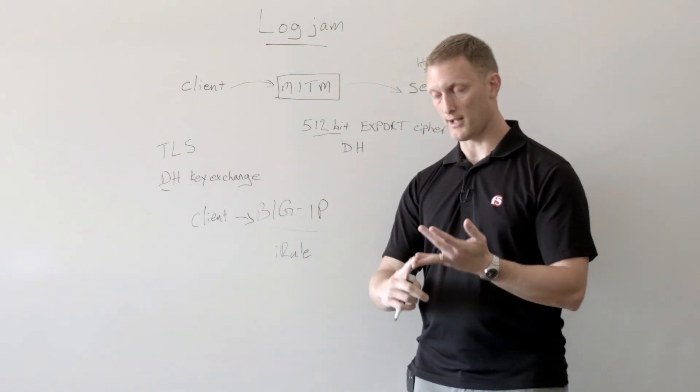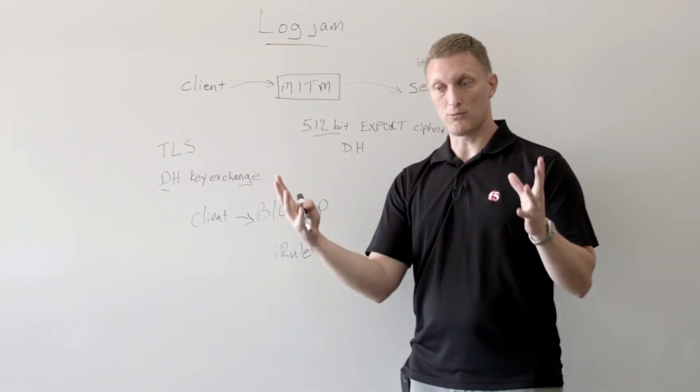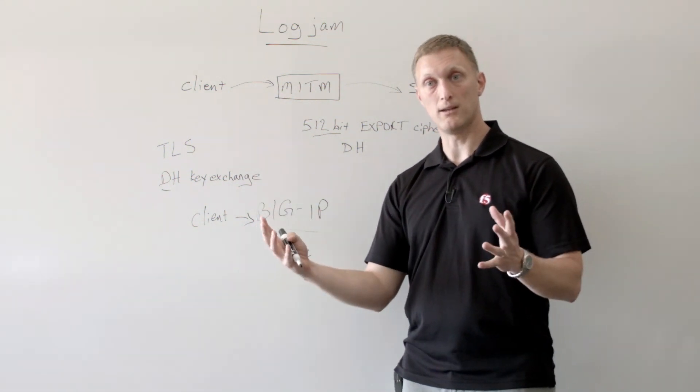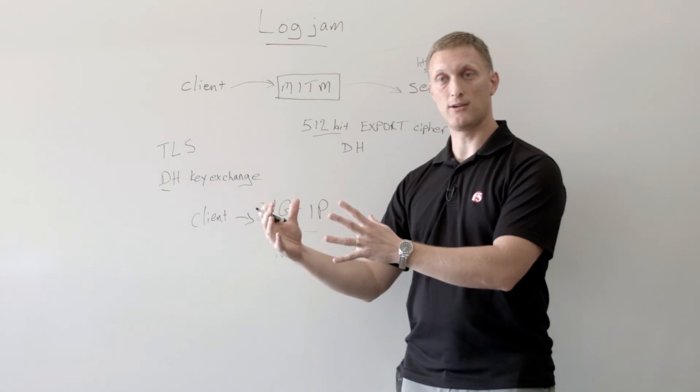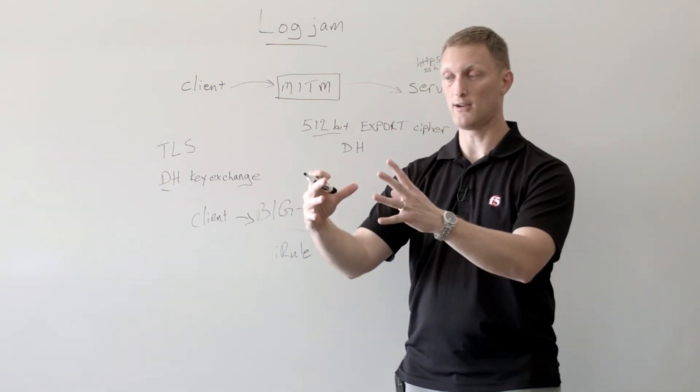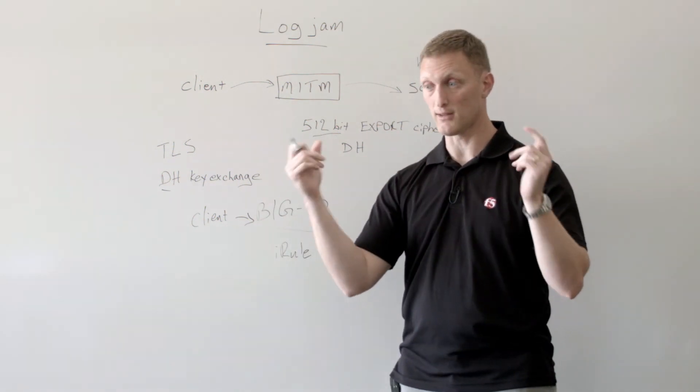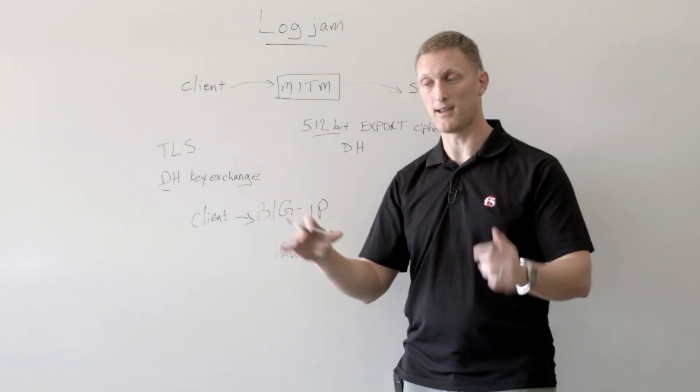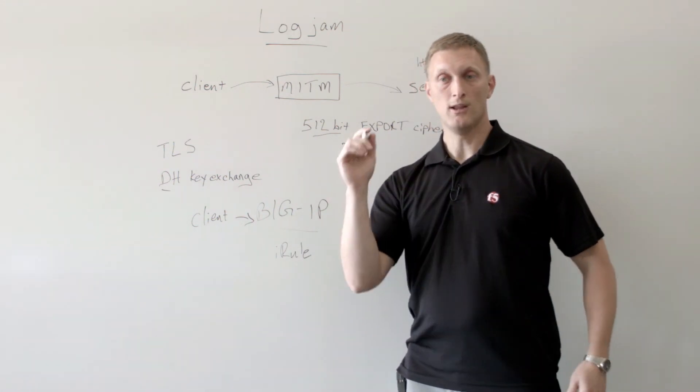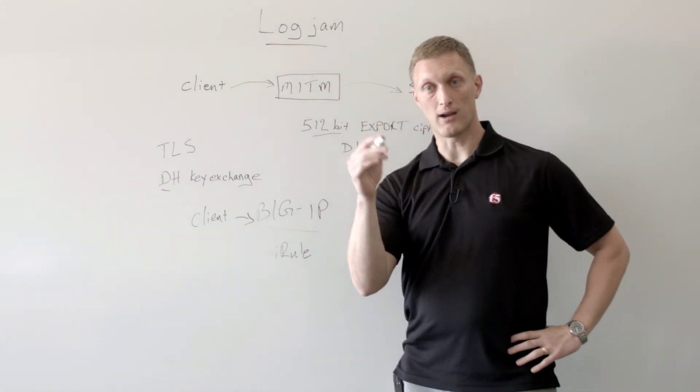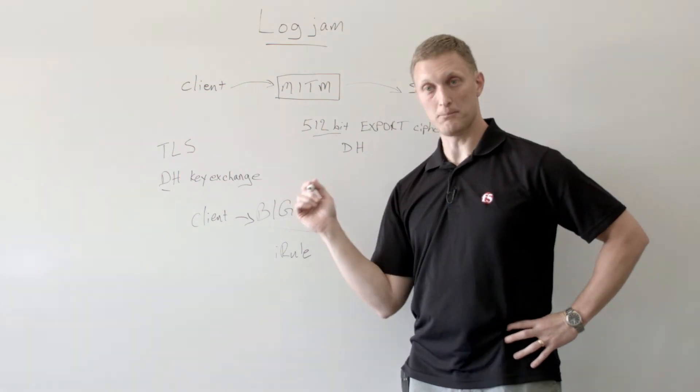When Heartbleed happened or any of these really significant vulnerabilities, guys out there on Dev Central were able to say, hey, here's an iRule that can mitigate this. Literally, you turn it on right now and it mitigates it right now. And so it's really cool. So Jason Rahm actually wrote an iRule that actually blocks this stuff.